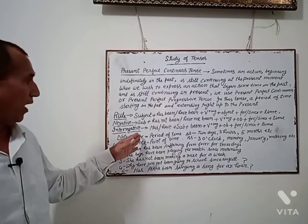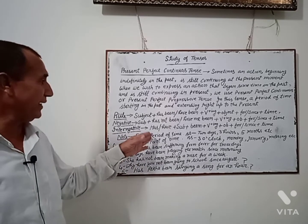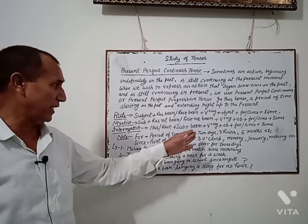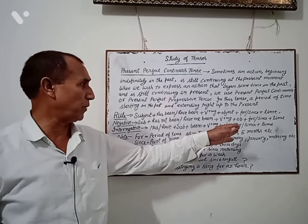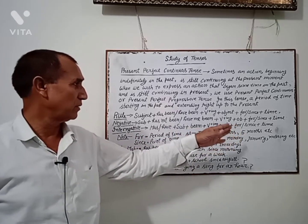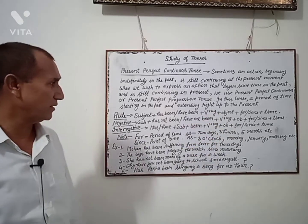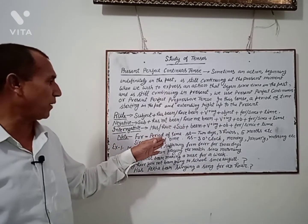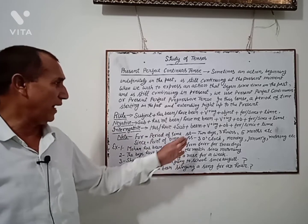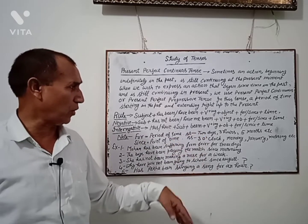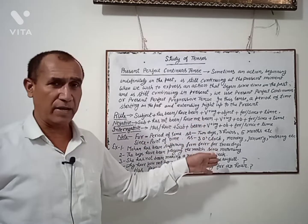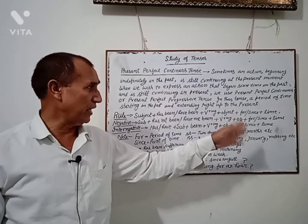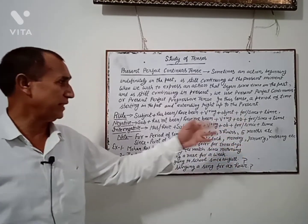Note: 'For' is used for a period of time, such as 2 days, 3 months, 5 months, 3 years, 4 years. 'Since' is used for a point of time, such as 3 o'clock, 4 o'clock, Sunday, Monday, Tuesday, January, February, morning, evening.